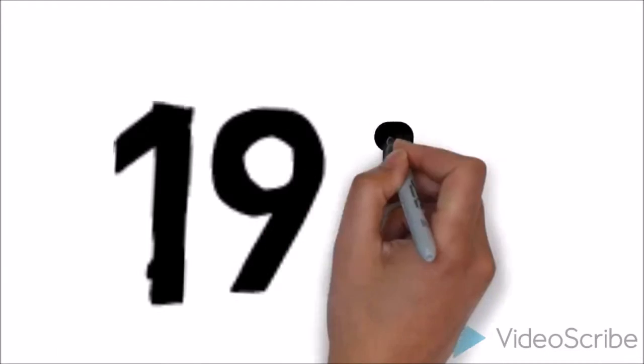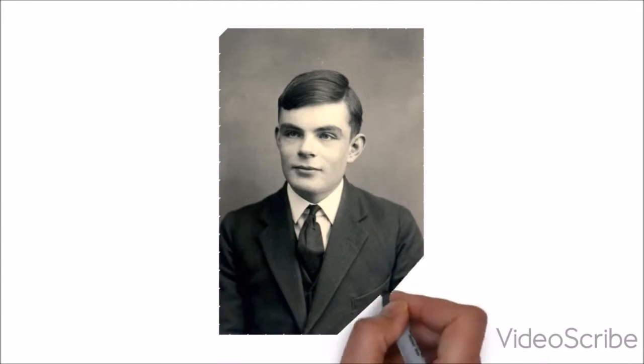Turing was born in London in 1912. He was famous for being a mathematician who built the first digital computer and is known as the father of modern computing, cryptographers and hackers.